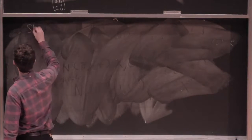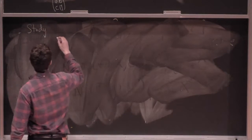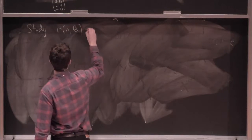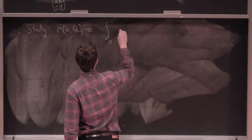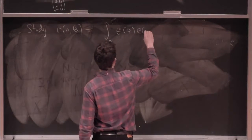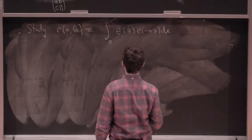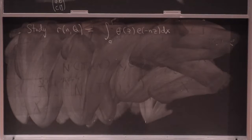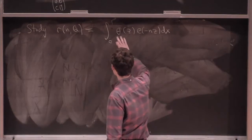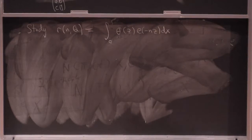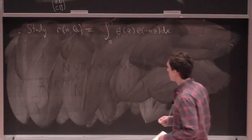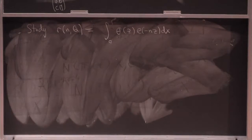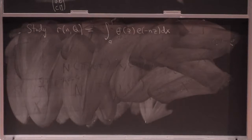If we want to study the representation number R(N,Q), it's the Fourier coefficient of theta(z)·e(-Nz) integrated — we're integrating around a circle and doing the circle method. This theta function will have different behavior if we're very close to a rational number or far from a rational number with small denominator. We have to break up this integral into pieces and use this modularity relation.